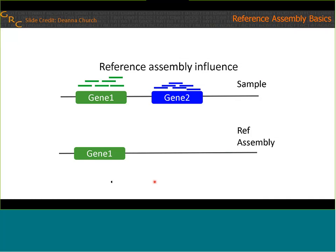Even though the human reference is the highest quality mammalian genome that's ever been produced, we in the GRC tend to focus on the fact that it does still have some missing and misassembled sequence. These issues can have really dire consequences for genome interpretation. For example, if a sample has gene 1 and gene 2, and in the reference assembly gene 2 is missing, gene 2 could be missing either because it's an assembly error or because gene 2 is polymorphic in the population.